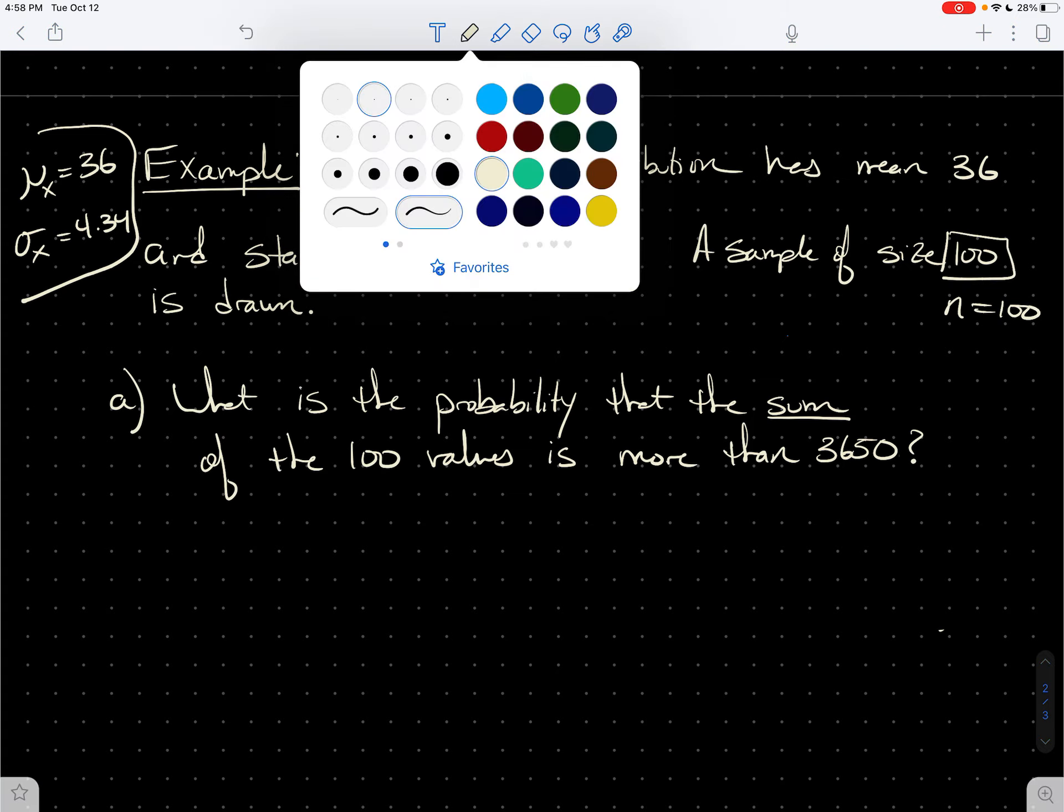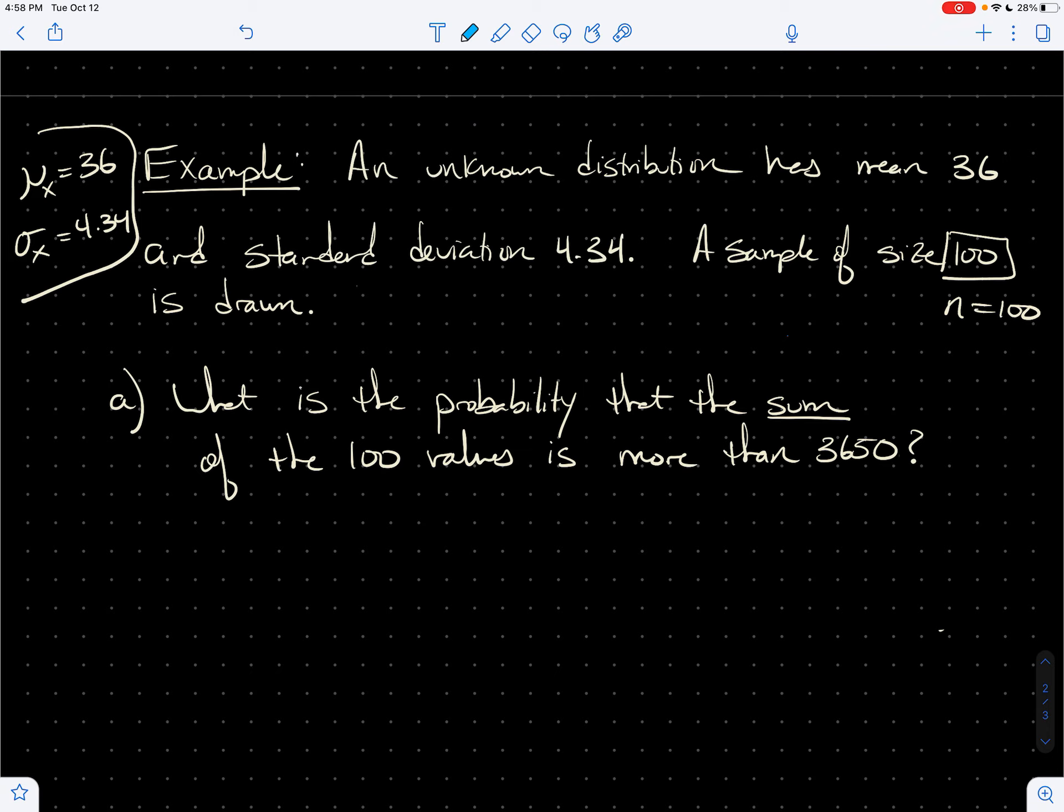And I want you to realize that we need to view this particular sample as just one of all possible samples of size 100. That's really the key to understanding the central limit theorem, I think.